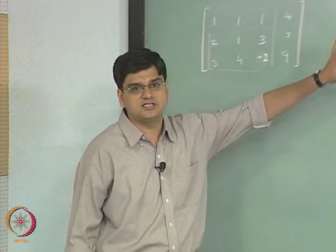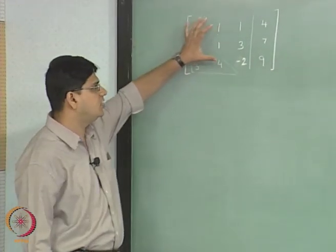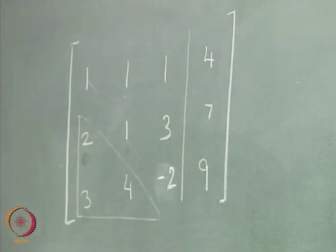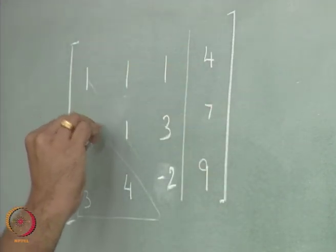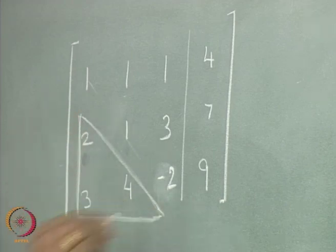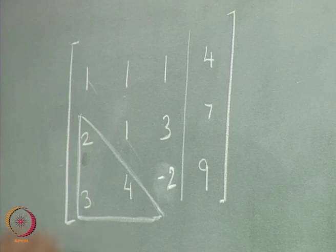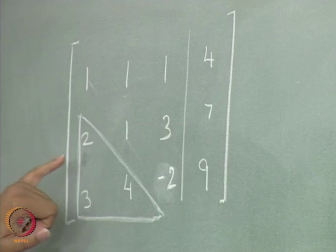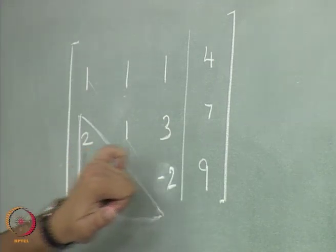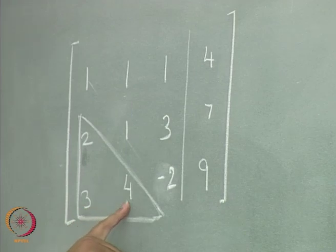I have written down the matrix A and the vector B that we considered in the previous lecture in this matrix form. I have also shown here this lower triangle part of this matrix. We are going to make this lower triangle 0 using the Gauss elimination process. What we did was use row 1 in order to get 0s over here and over here. Next we use row 2 in order to get 0 over here.